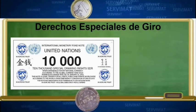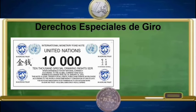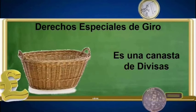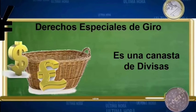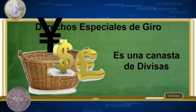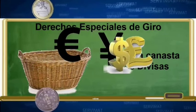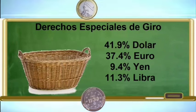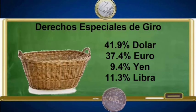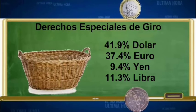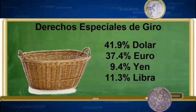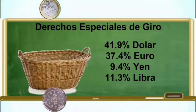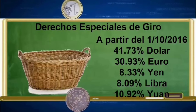Los derechos especiales de giro son una unidad contable del Fondo Monetario Internacional cuyo valor se calcula mediante una canasta de divisas que incluye la libra esterlina, el dólar estadounidense, el yen japonés y el euro. Es decir, el valor de los derechos especiales de giro se calcula mediante el peso de la economía de cuatro regiones: Estados Unidos, Gran Bretaña, Europa continental y Japón. Al día de hoy la ponderación es: 41,9% dólar, 37,4% euro, 11,3% libra esterlina y 9,4% yen japonés. Pero a partir del próximo 1 de octubre esta composición cambiará.